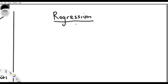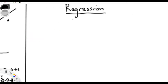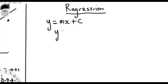Now for regression — regression is a linear equation that can be used to represent the line on a scatter diagram. If you are trying to find a linear equation that represents the scatter diagram, that is regression. It uses the knowledge of a linear equation, which is y equals mx plus c, or equivalently y equals a plus bx.